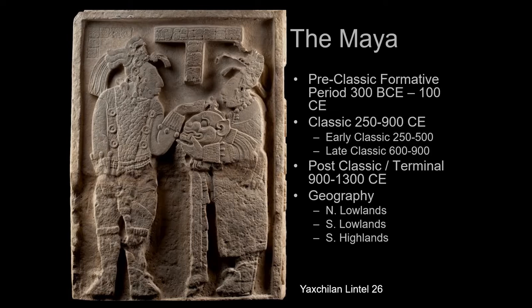The Maya have a very long history. They're there in the pre-classic formative region. In the southern highlands, they are present from a very early period, about 300 BC up to about 100 CE. But beginning around 250–300 CE, we enter the classic period, which we break down into early and late classic. The late classic, about 600–900 CE, is generally regarded as the high point of Mayan civilization.